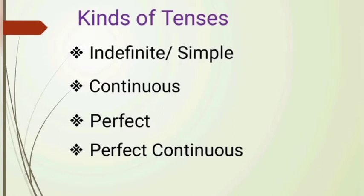Dear students, these three tenses — the present, past, and future — are divided into four kinds: indefinite or simple, continuous, perfect, and perfect continuous. But today, we are going to discuss only the indefinite or simple aspect of present and past tense.